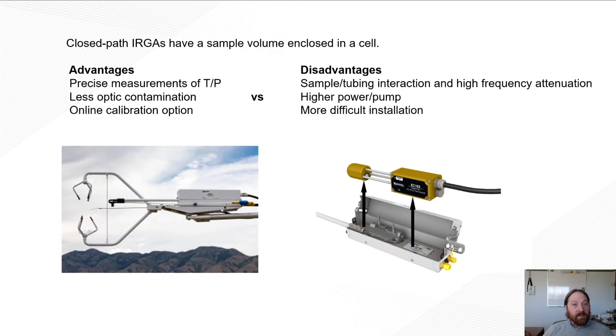Where you may want to use an open path is that if you have a very small or very short canopy, and so you need to resolve those really high-frequency eddies, the high-frequency response of the open path will be better. At a remote site where you have very little power available, you may need to go with an open path because then you don't have to worry about having the pump or the heat, the added power for the pump and the heat.